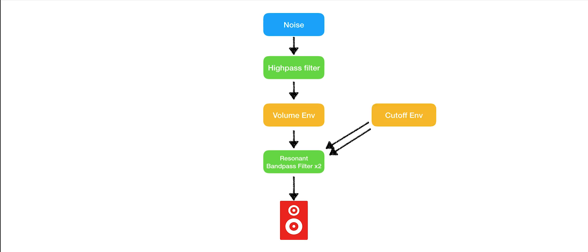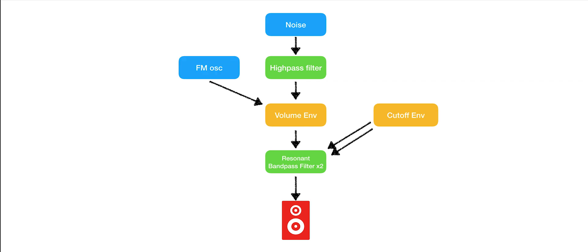Finally, for a bit of punch, and ring, and tone, we add a simple frequency modulated oscillator. See tutorial 6 for more on frequency modulation.